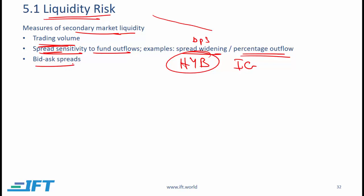The classic measure of liquidity risk is the bid-ask spread. The higher the spread, the lower the liquidity. During periods of high volatility, the bid-ask spread can also be quite volatile, but once volatility comes down the bid-ask spreads also settle. The central point is that if liquidity is low, the bid-ask spread will be high.